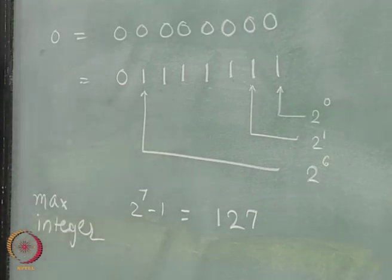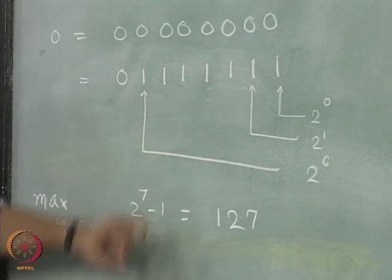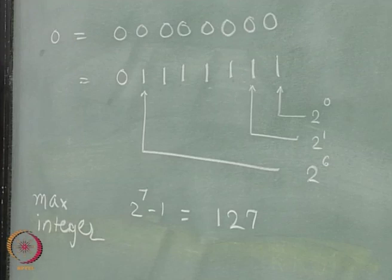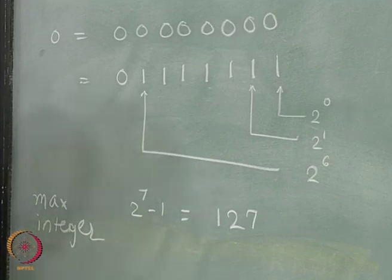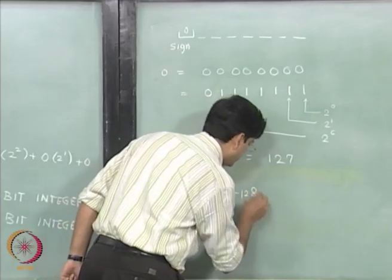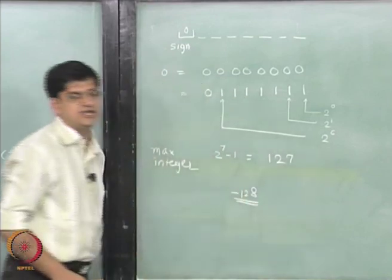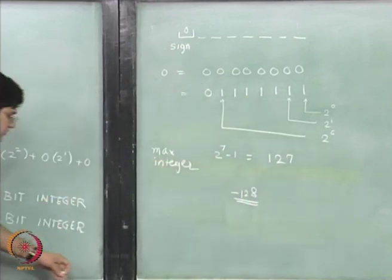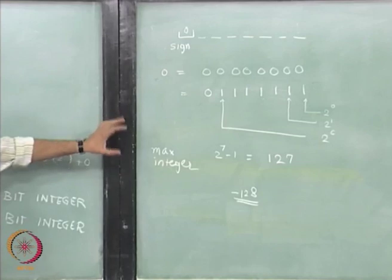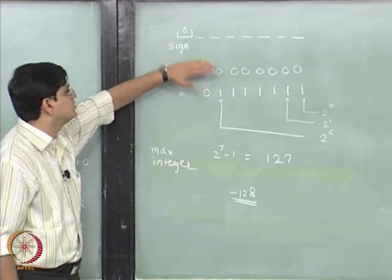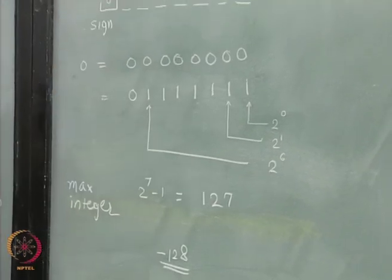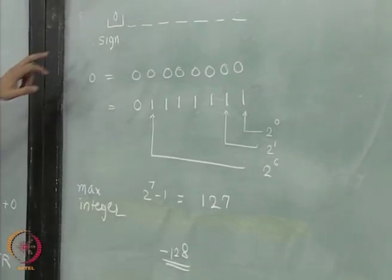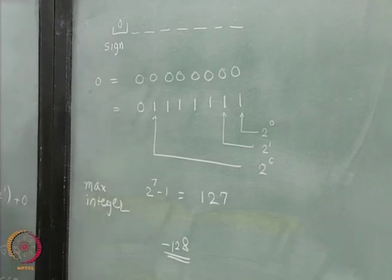127 is the largest number that can be represented using an 8-bit integer representation. Likewise, the smallest number that can be represented is going to be minus 128. For the negative numbers, the sign bit will be 1, and for the positive numbers, the sign bit will be 0.